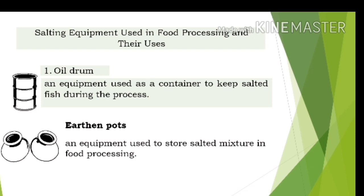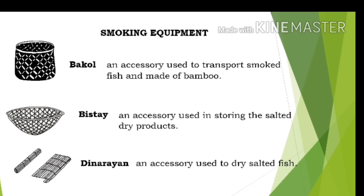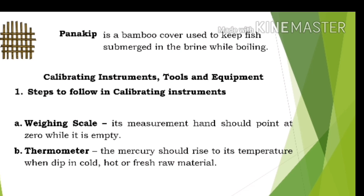Salting equipment used in food processing: Oil drum, an equipment used as a container to keep salted fish during the process. Earthen pots, used to store salted mixture in food processing. Wooden salting vat, used as a container in the salting process. Kugun, used to smoke fish. Smoking equipment. Bakol, an accessory made of bamboo used to transport smoked fish. Bistay, an accessory used in storing salted dry products. Dinarayan, an accessory used to dry salted fish. Panakip, a bamboo cover used to dry salted fish. Bistay is also used to keep fish submerged in brine while boiling.